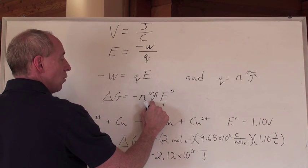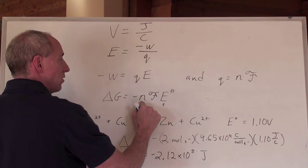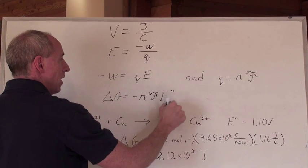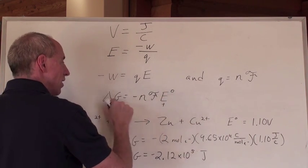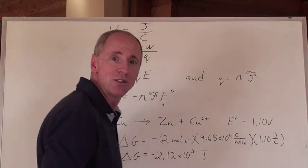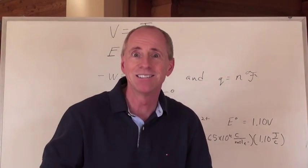If that's positive, and Faraday's constant is always a positive value, and the number of moles of electrons is always positive, then this whole thing is negative. And if you've got a positive cell voltage, you have a negative delta G, which means spontaneous.